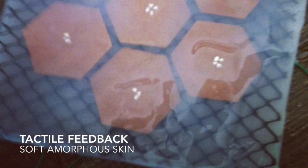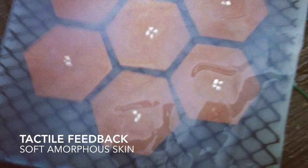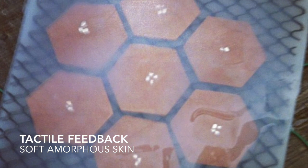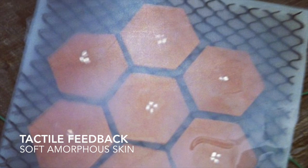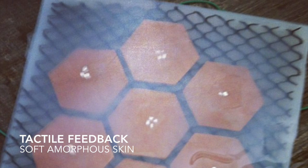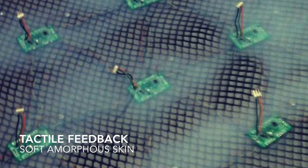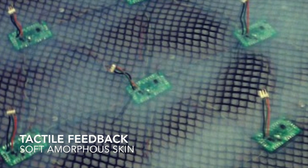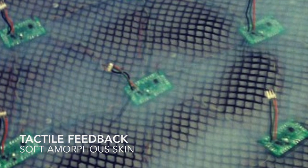Finally, we are also developing a soft, amorphous skin based on the physiology of human skin. Sensing nodes are distributed throughout the skin to measure tactile stimuli, such as pressure and vibration. Local neighborhoods of nodes collectively perform tasks such as localizing the source of a stimuli.